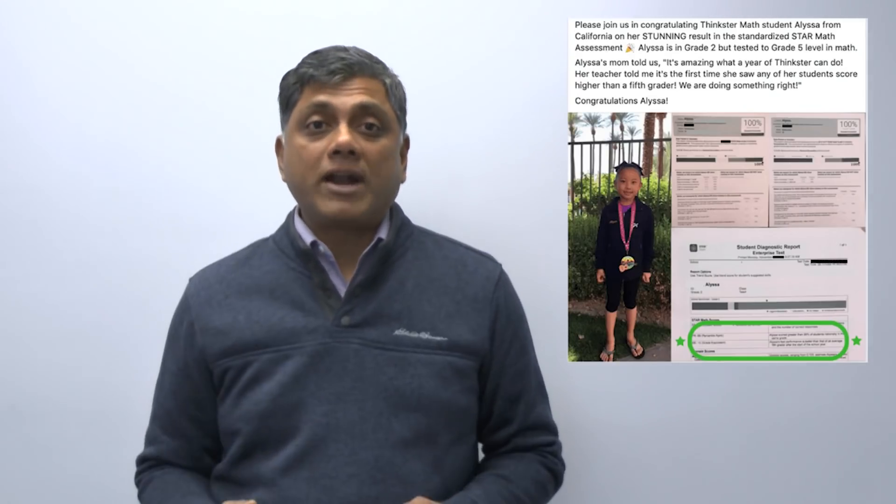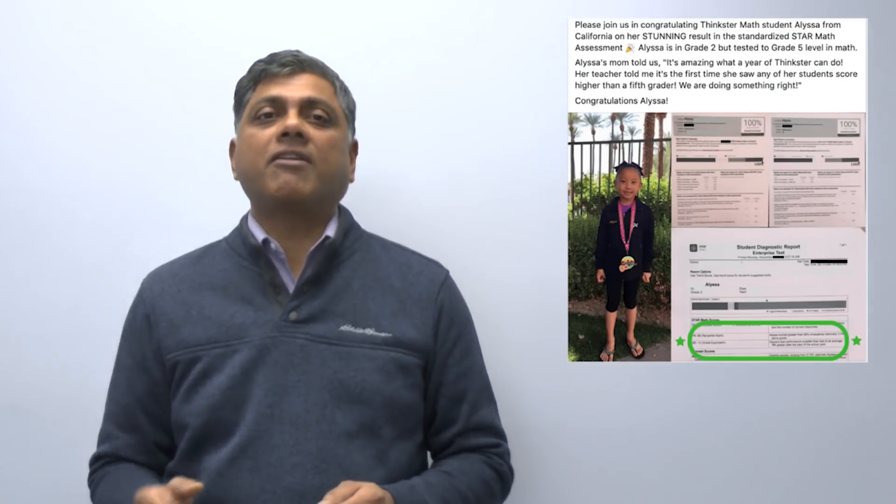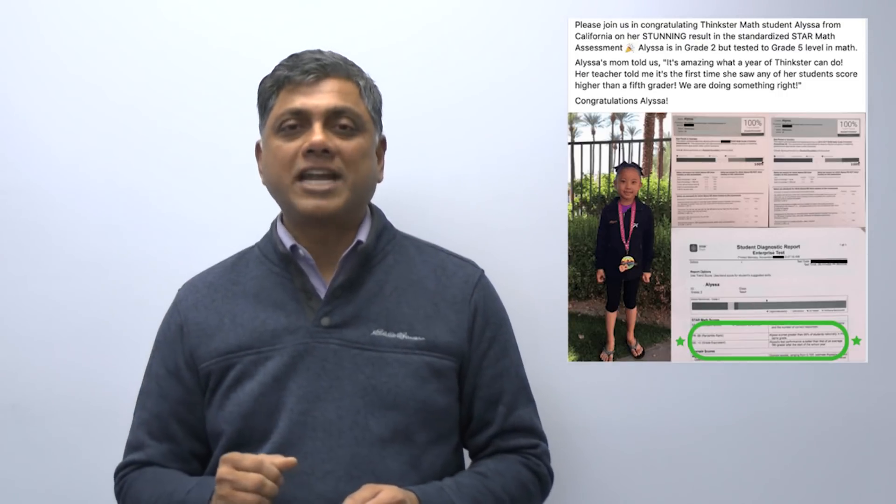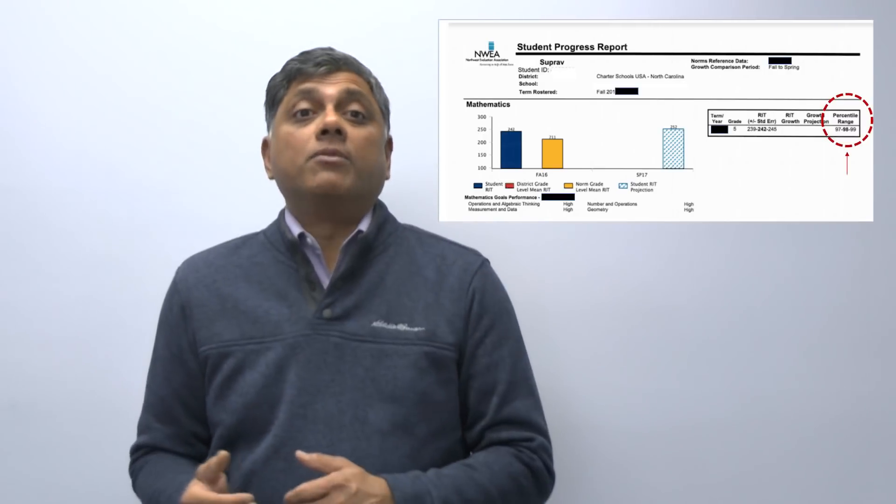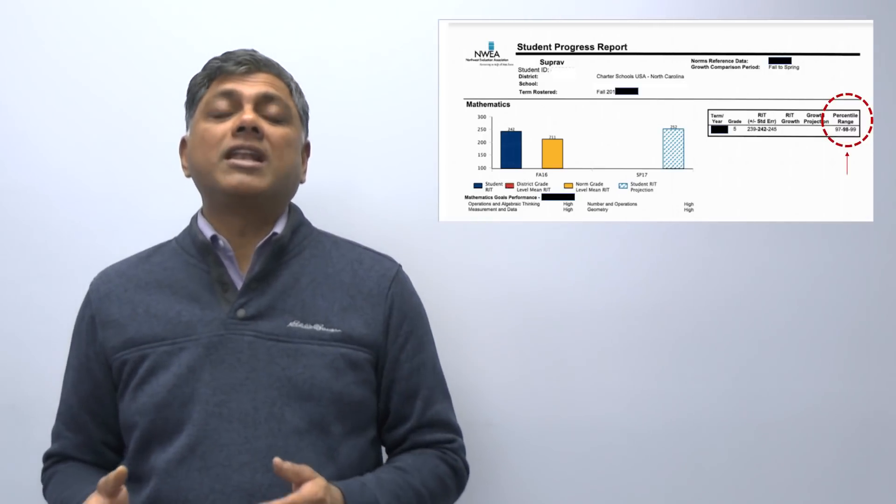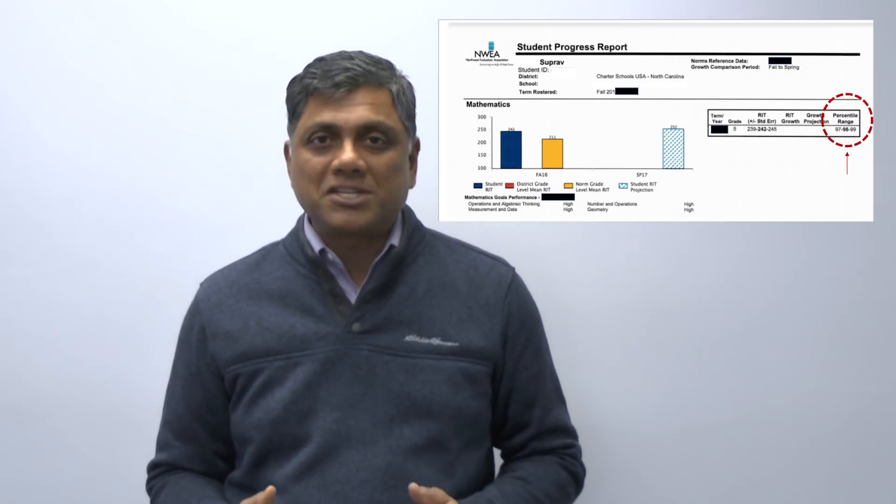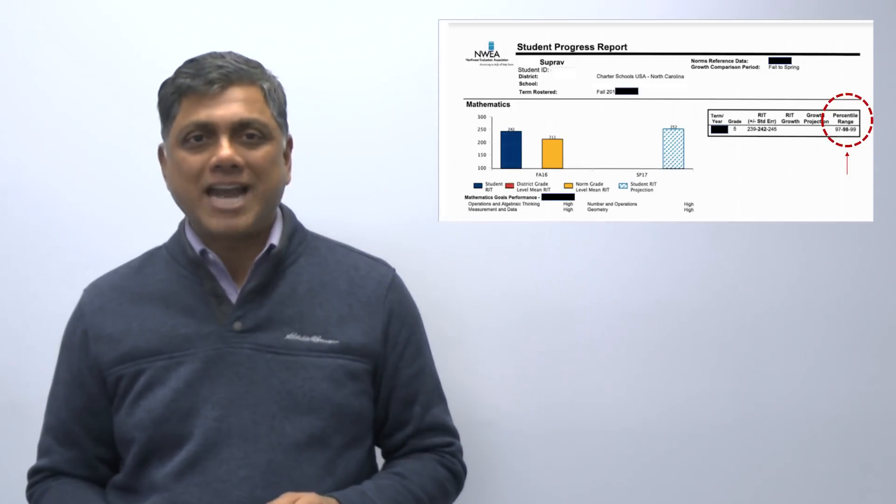Or Alisa, a second grader from California who tested at a fifth grade level on our state standardized math assessment. There's also Supraaf from North Carolina who scored in the 97th to 99th percentile on his math MAP test.